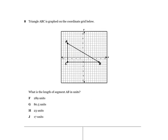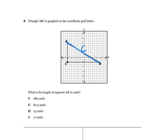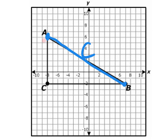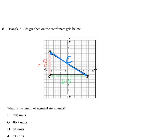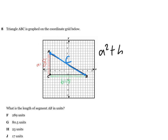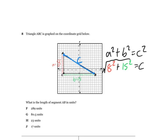Number 8 is another coordinate grid problem asking for the length of segment AB, which is our side c. Counting the sides, this side is 8 — that's side A — and the other side is 15, that's side B. Using a squared plus b squared equals c squared: 8 squared plus 15 squared, then take the square root to find c. Work that out on your own.